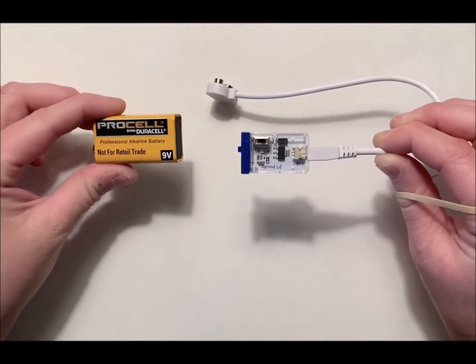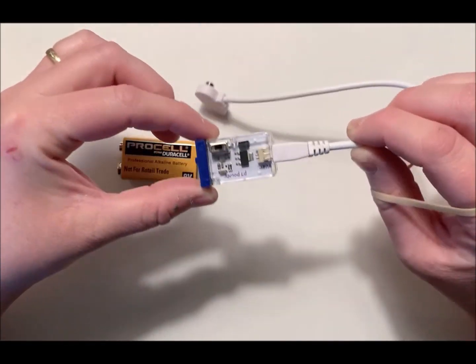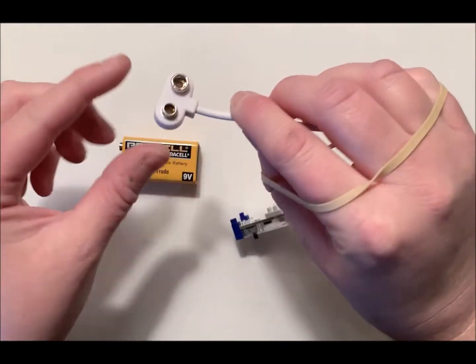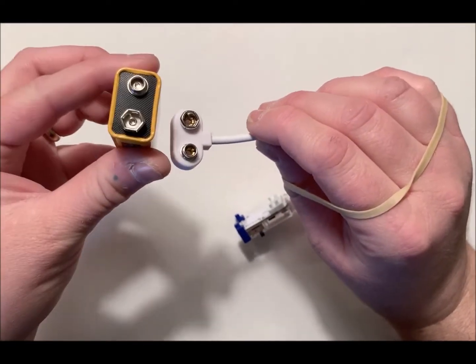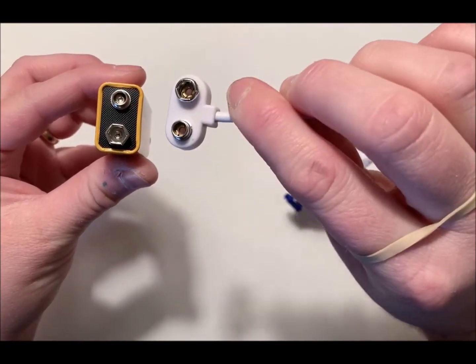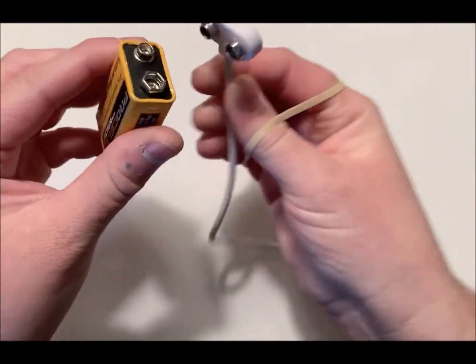The first thing we need to do is hook up the power. This bit right here is called the power bit and the end of it hooks up to a 9-volt battery. What you have to do is, if you see there's a big side and a little side, you have to match the big side to the little side on each one, so they match to the opposite: little side to big side.